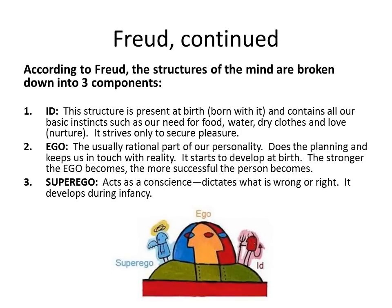According to Freud, the structures of the mind are broken into three components. First, we have the id. This structure is present when we're born and contains all our basic instincts. Think about a very young baby — they're hungry, they want to be dry, and they want to be cared for. These basic needs give us pleasure: if we're hungry and someone feeds us it feels good, if we're wet and someone dries us off it feels better, and when somebody hugs or holds us, that too makes us feel better.